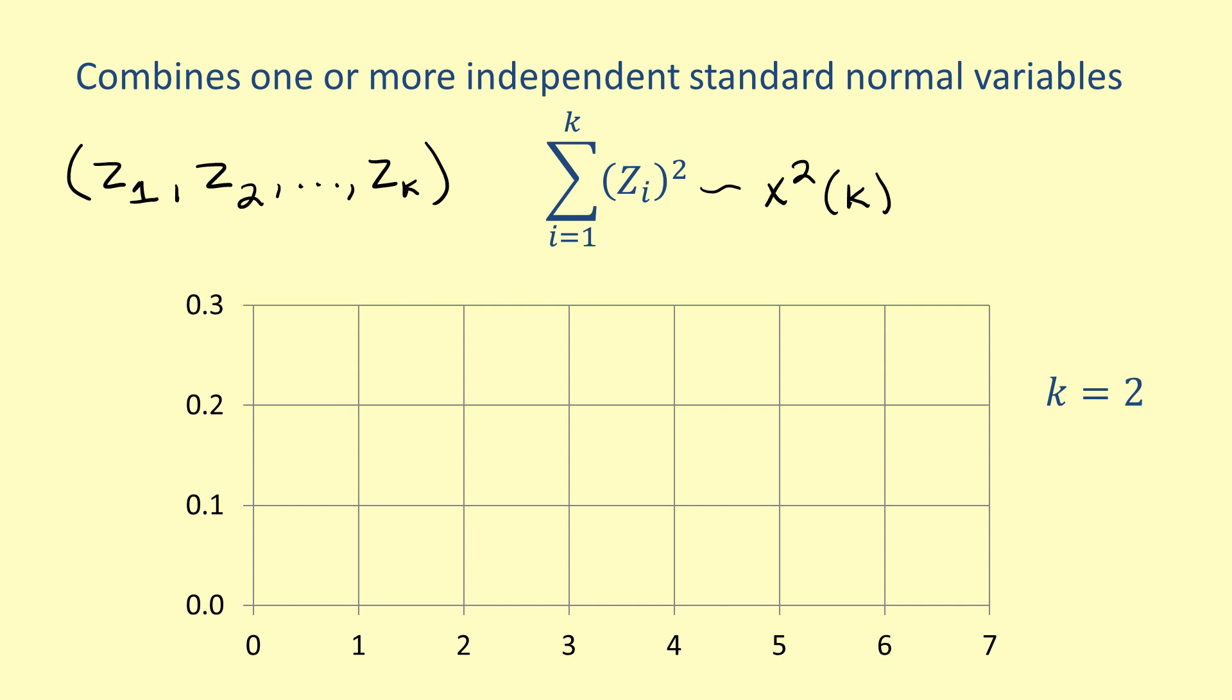The shape of this distribution is quite a bit different from the symmetrical shape of a standard normal distribution. For one degree of freedom, the distribution is continuously decreasing. The shape is similar for two degrees of freedom. For three degrees of freedom, the shape becomes different. There is a single peak and a long tail to the right.